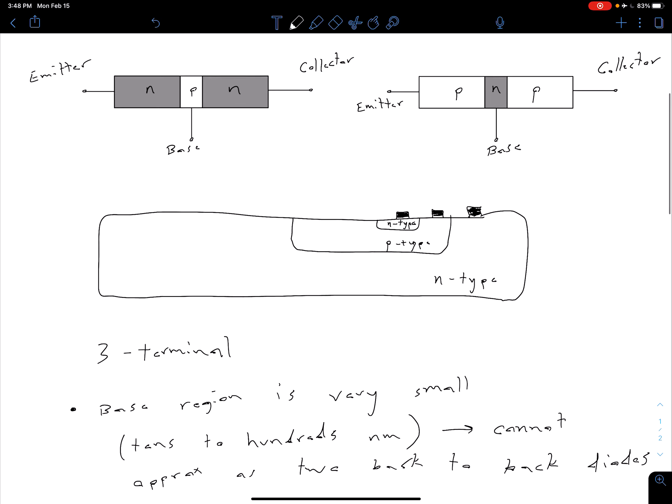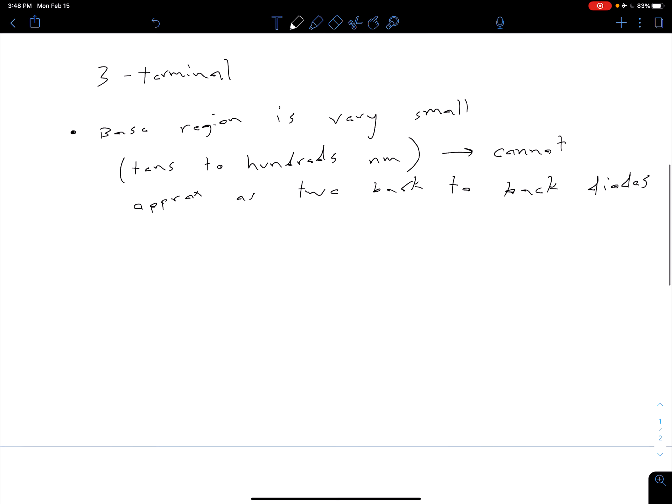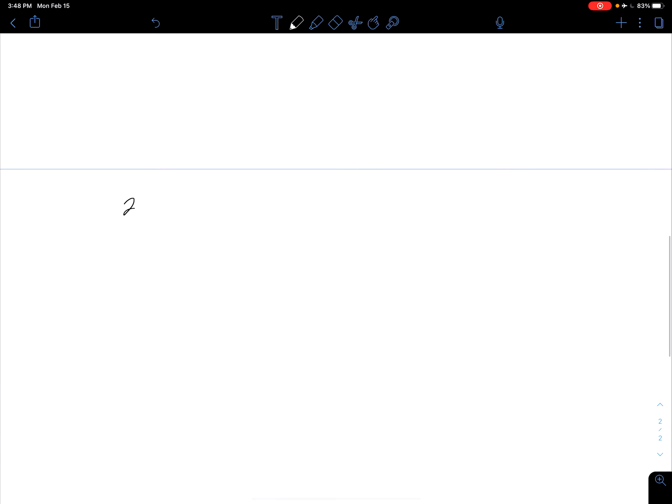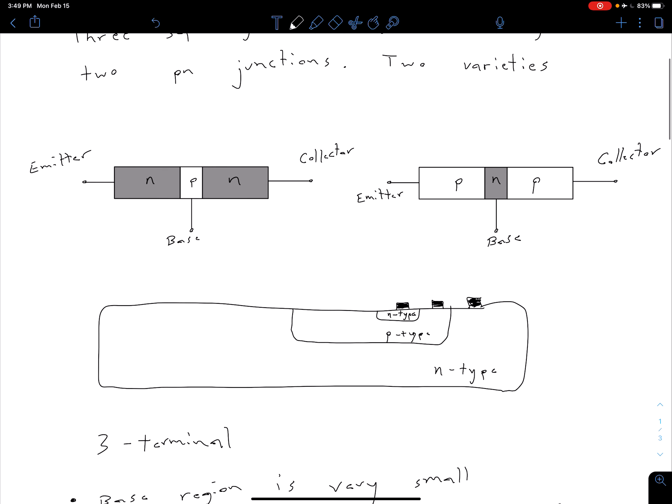We do still have these two PN junctions, so that means overall we're going to have four possible operating conditions. This is per device. Two PN junctions means that we have four operating conditions because with each of our PN junctions, it can be either forward biased or reverse biased. I'm going to show a quick plot and we're going to reference it a lot later.